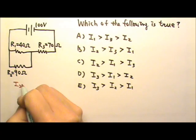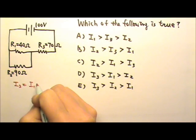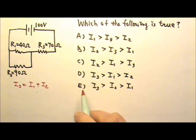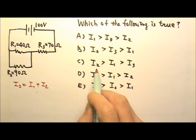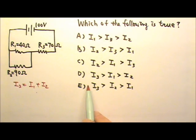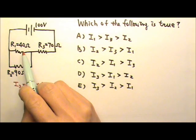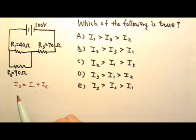Therefore, I3 equals I1 plus I2. So I3 must be the biggest. The answer can only be either D or E. But we still need to compare the current in R1 and R2.